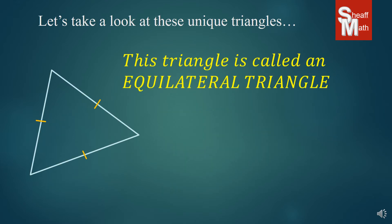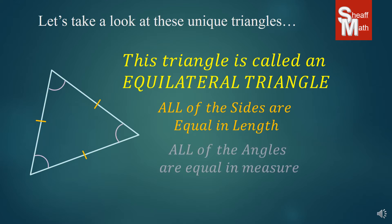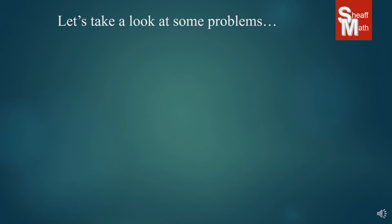Now this particular triangle is what we call an equilateral triangle, and we call it that because all of the sides are equal. Now it's technically in the isosceles family, but we rarely refer to it as isosceles. In the equilateral triangle, all of the sides are equal in length and all of the angles are equal in measure. All right, let's look at some problems.